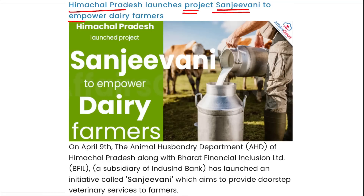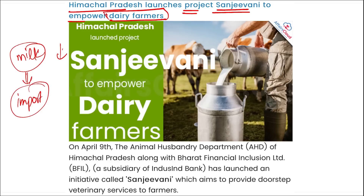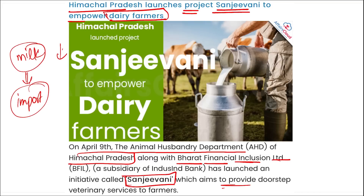Himachal Pradesh launched Project Sanjeevani to empower dairy farmers. The Animal Husbandry Department of Himachal Pradesh, along with Bharat Financial Inclusion Limited, launched this initiative to provide doorstep services to farmers — including collecting milk and delivering it to customers — and to help farmers in different fields of dairy management.